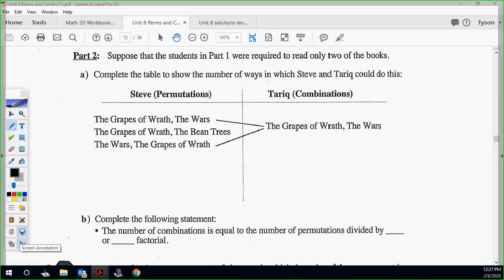Let's look at this example, continuing the same example. Suppose the student in part one were required to read only two of the books. Complete the table showing the number of ways in which Steve and Tariq could do this. So only two books. If we're doing permutation Steve, so he's only doing two books. I'll just use letters. So W and B, G and W, G and B, B and W, W and G, and B and G.